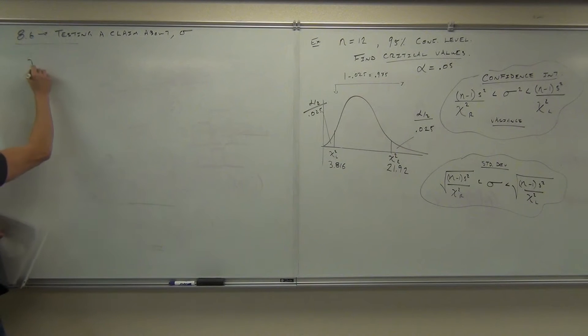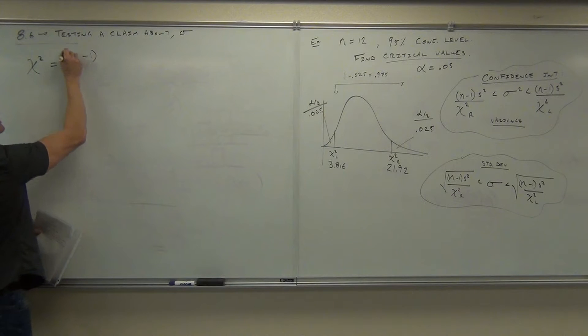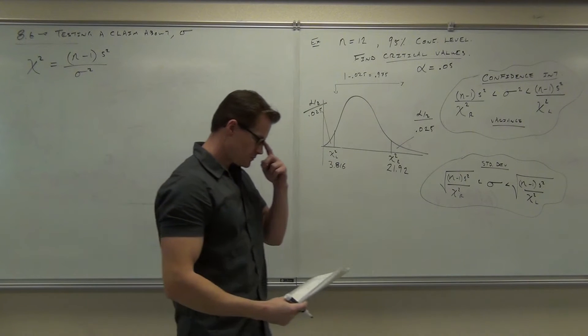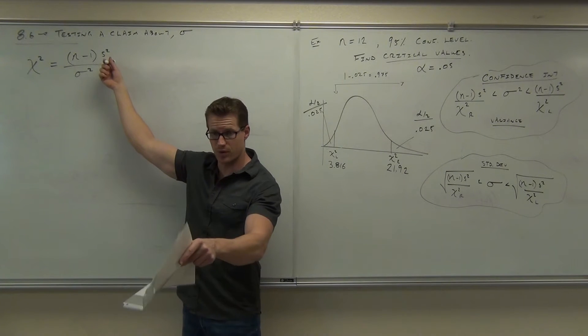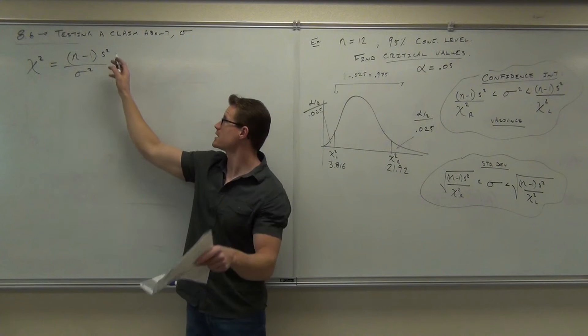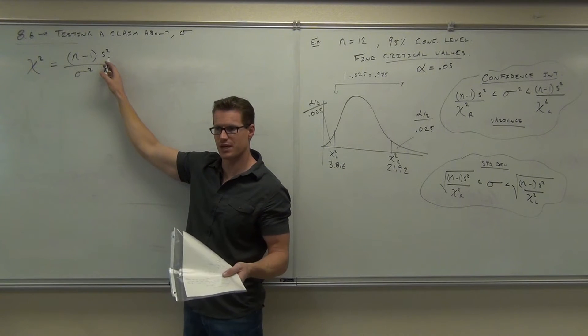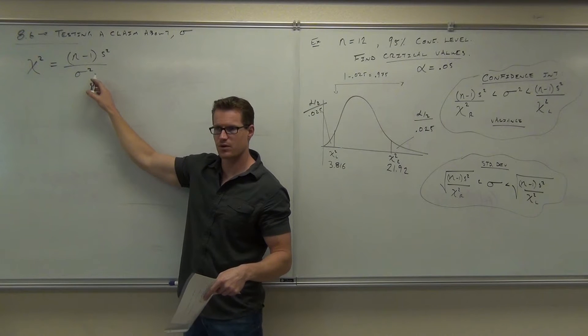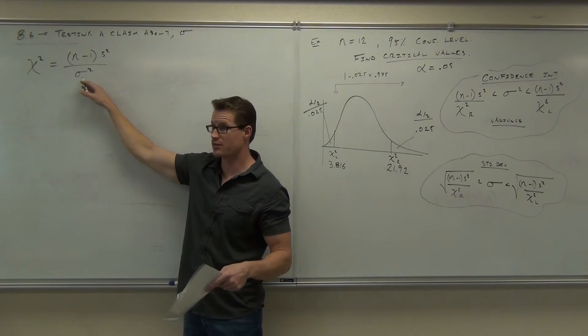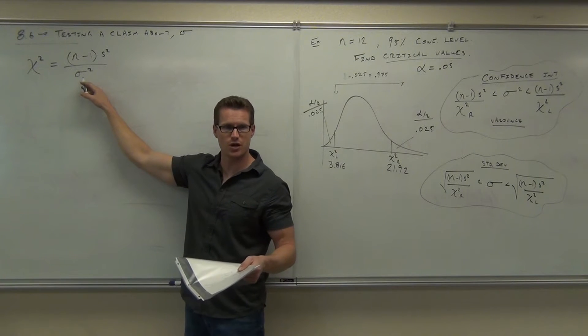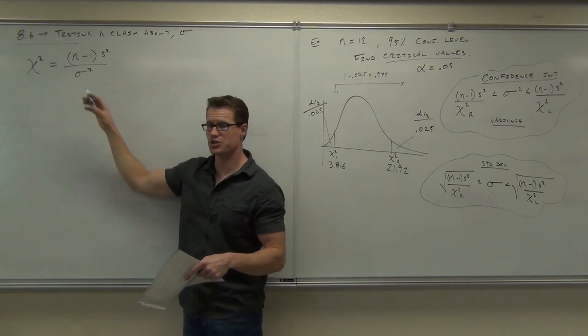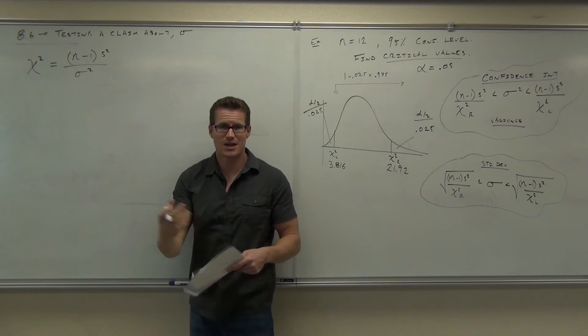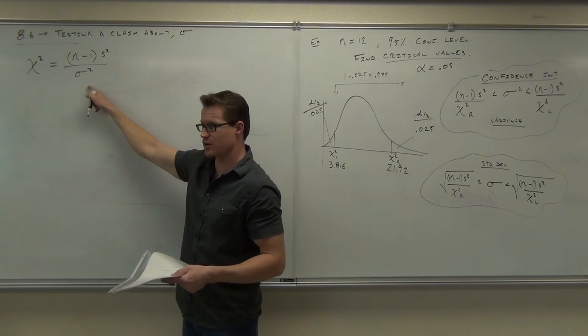And to use that, we have a different test statistic. The test statistic is what I gave you last time: chi squared equals N minus 1, S squared over sigma squared. By the way, S squared is sample variance, or sample standard deviation squared. Sigma squared is population standard deviation squared, or population variance. We're not going to know that one, but this is just like every other test we've done. This piece of information is going to come from some claim. That's our evidence against our claim, or for.